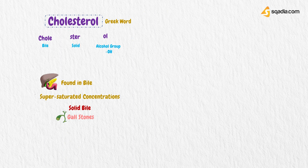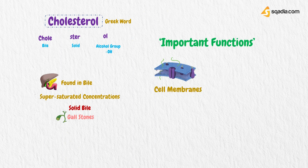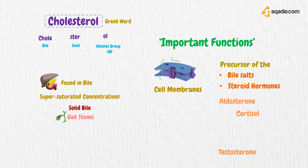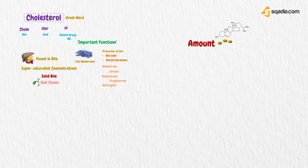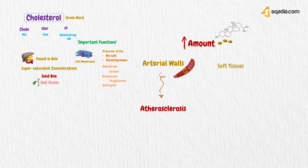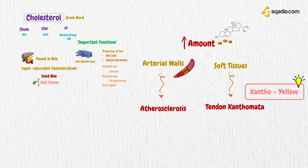Cholesterol has many important functions. For example, it is a component of cell membranes, and is a precursor of the bile salts and the steroid hormones that include aldosterone, cortisol, testosterone, progesterone, and estrogens. However, if present in excessive amounts in the blood, cholesterol is deposited in arterial walls, causing atherosclerosis. Cholesterol can also be deposited as yellow deposits in soft tissues, causing tendon xanthomata, which is cholesterol deposition in tendons. Xanthoma is a skin condition in which certain fats build up under the surface of the skin and give a yellow appearance.